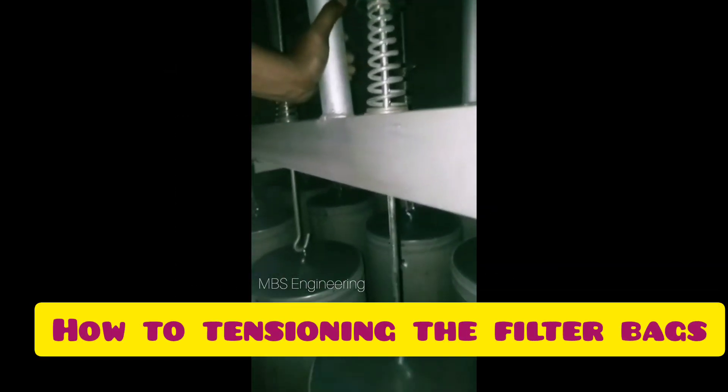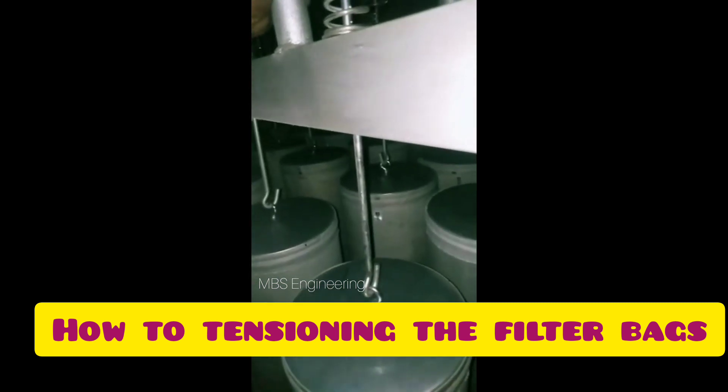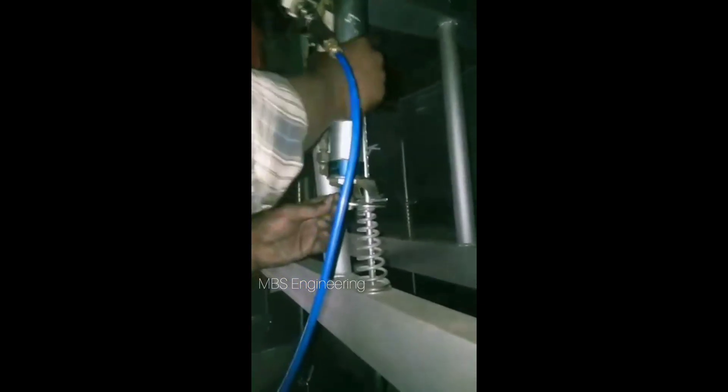We are going to understand the tensioning of filter bags. After all bags have been installed, they should be tensioned with a tensioning tool system to the specified tension. This is performed by inserting the tool on each tensioning assembly, activating the tool, and installing the hitch pin clip or clevis pin in the hole closest to the top of the spring.